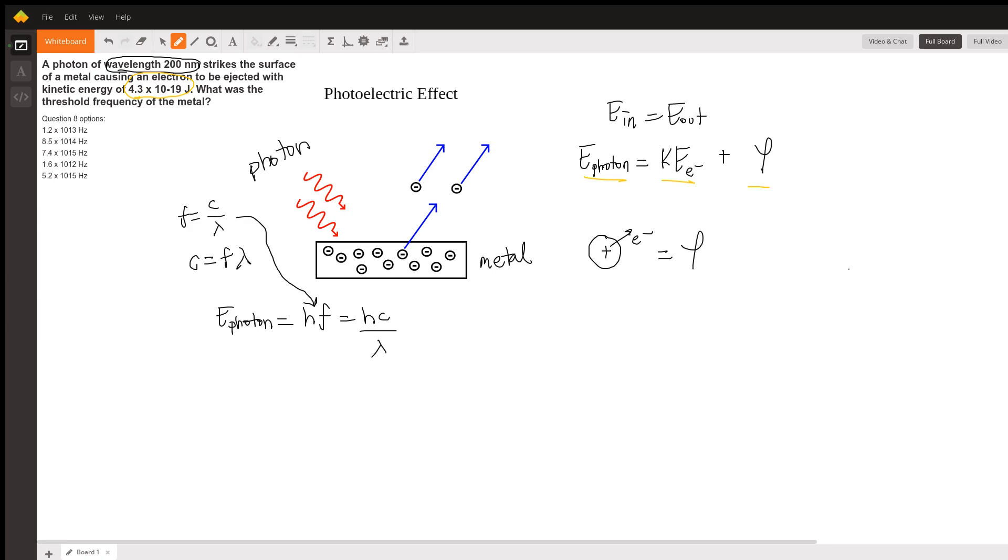It asks us what the minimum frequency of a photon going in is. If I want to know the energy required to kick off an electron, remember the energy of a photon is proportional to the frequency and the wavelength. If I figure out that the minimum energy is some psi, well that's equal to the energy of the photon.